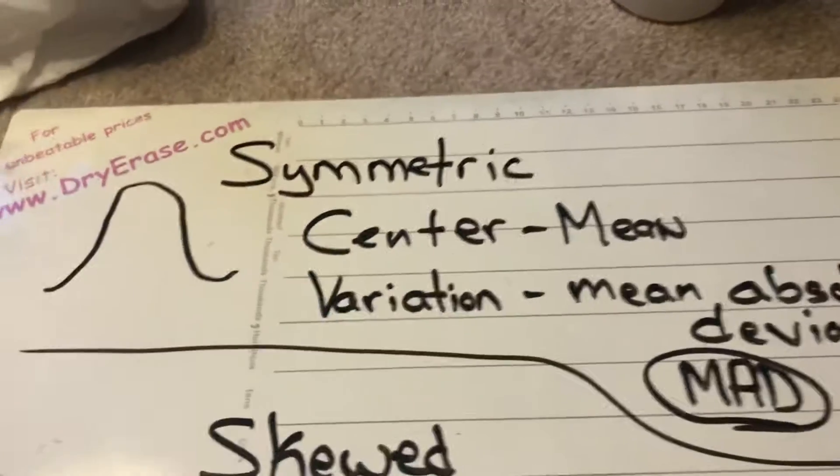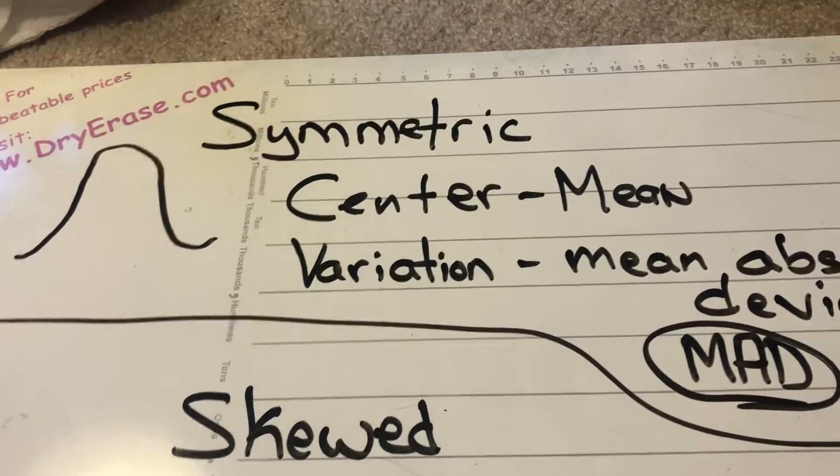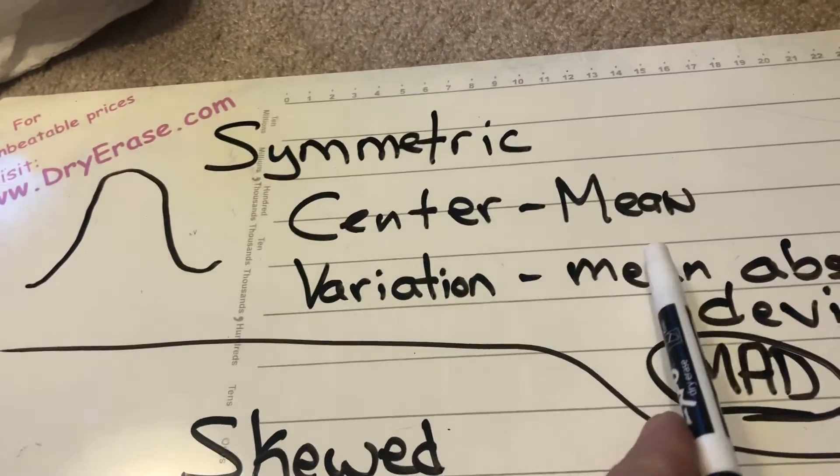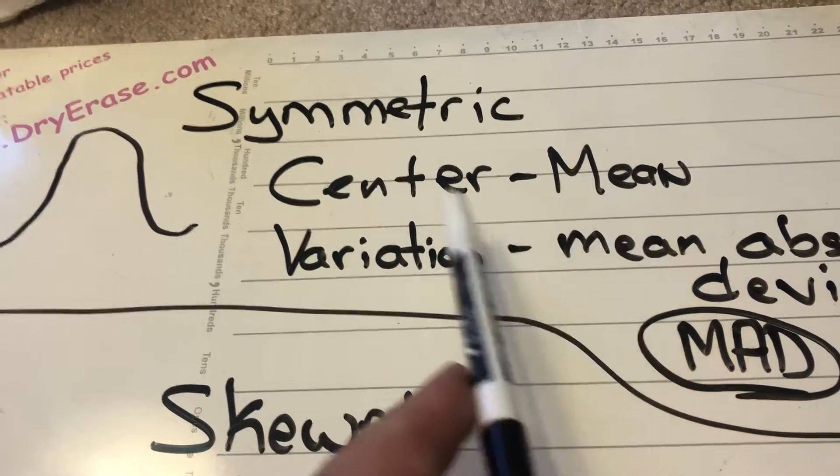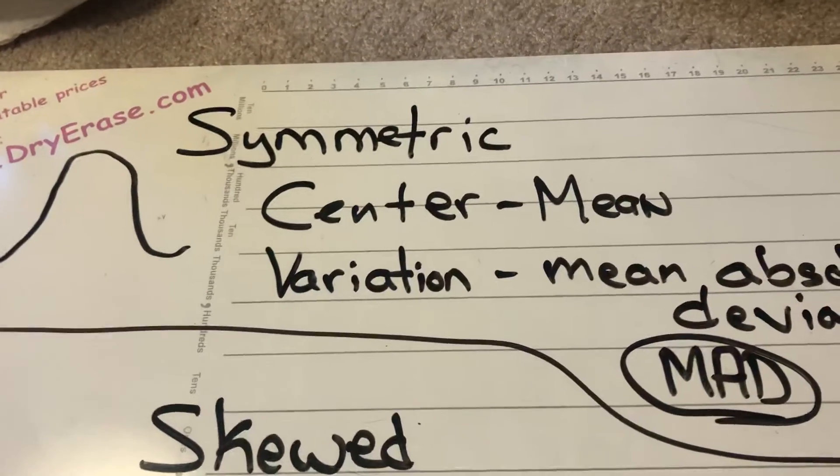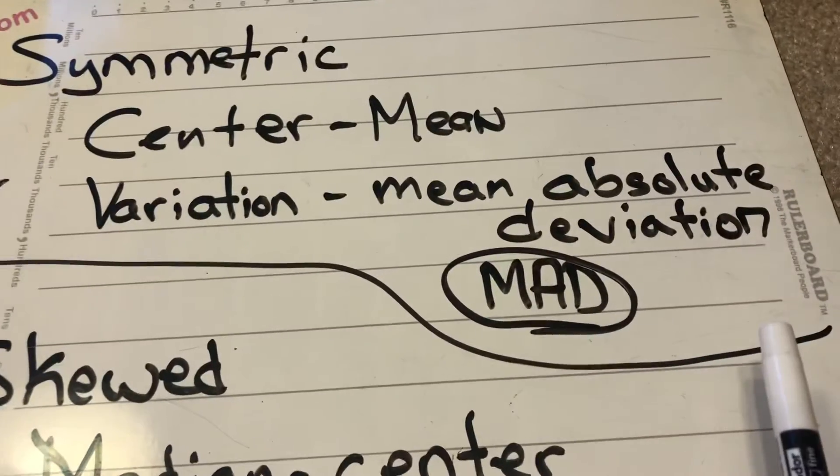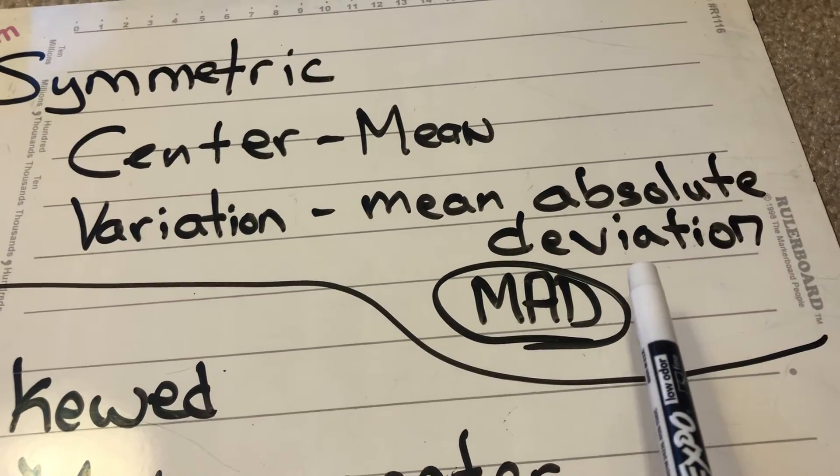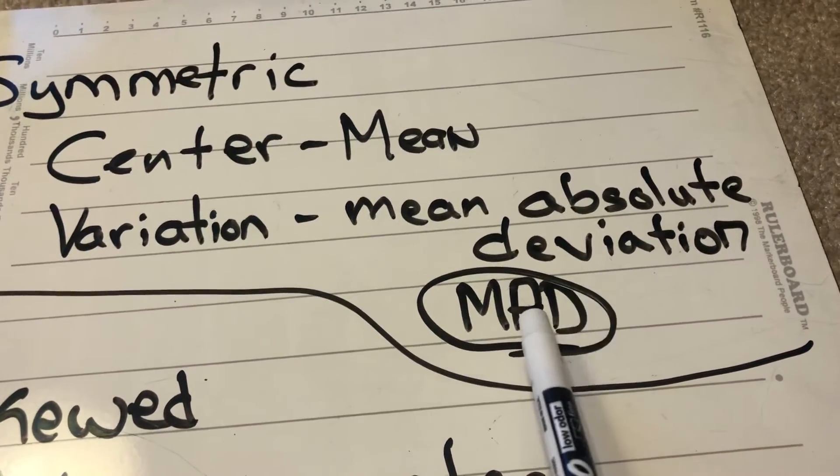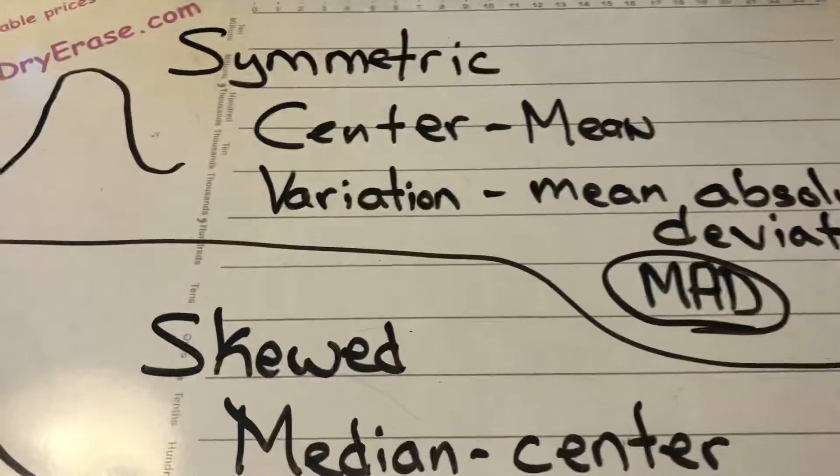When we're talking about a symmetric shape, we're going to use the measure of central tendency, the mean, to describe the center. And we're going to use the mean absolute deviation, or the MAD (M-A-D), to describe the variation.